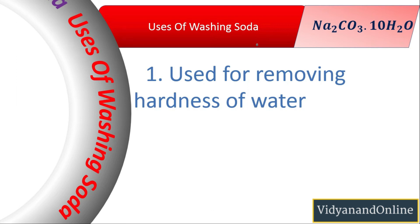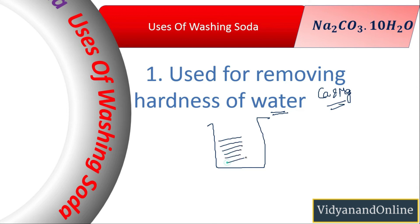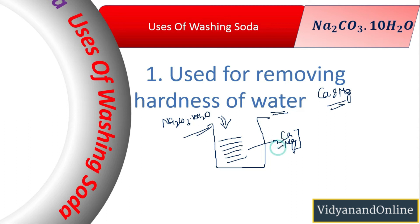Now let us see the uses of washing soda. First, it is used for removing hardness of water. Water from mountains contains dissolved calcium and magnesium salts, making it very hard. When washing soda is added to hard water, sodium carbonate decahydrate reacts with calcium and magnesium ions, forming insoluble compounds of calcium and magnesium that settle at the bottom and are filtered out.